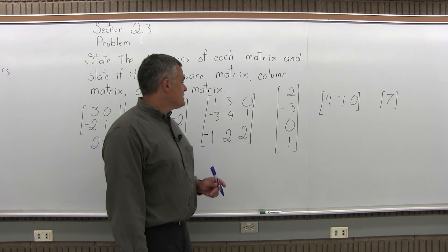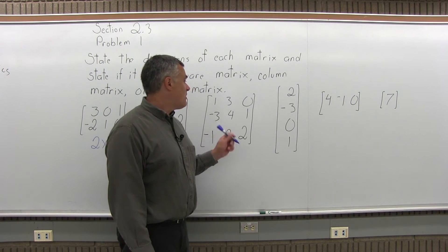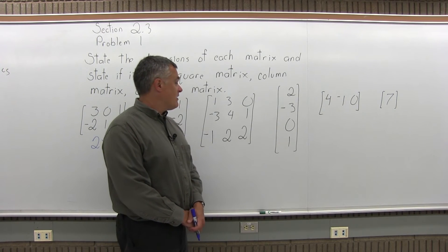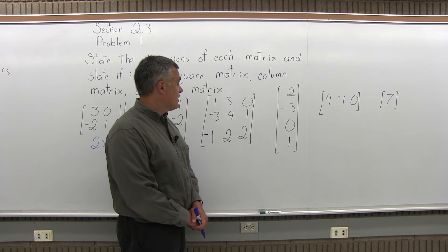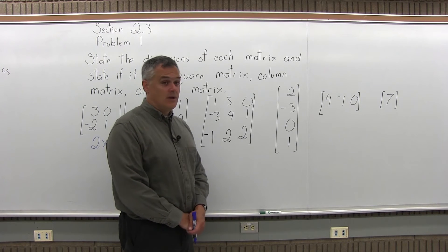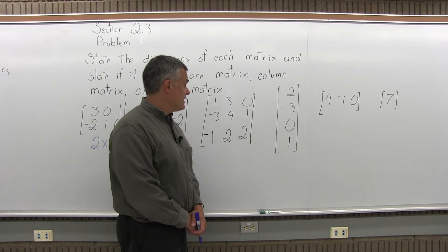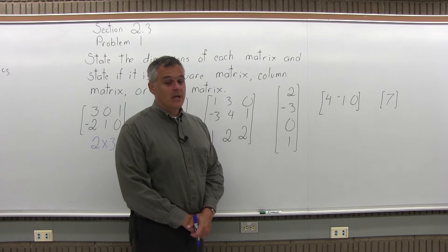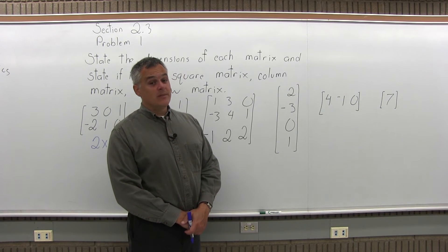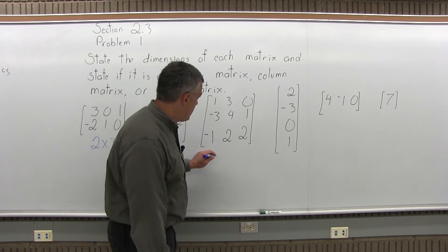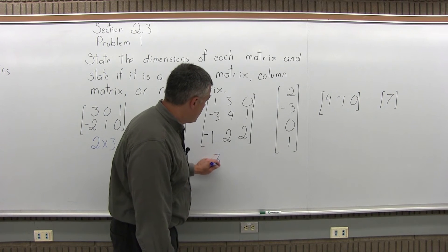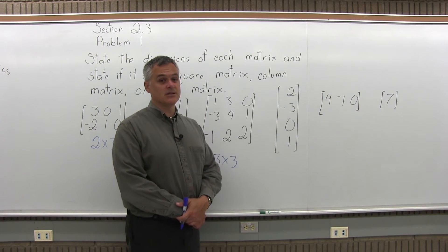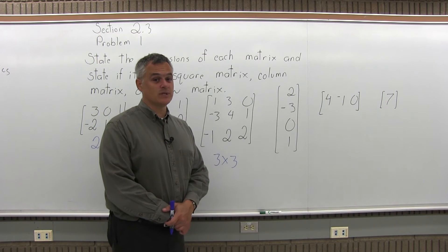The next matrix has a top row of 1, 3, 0; a row underneath of negative 3, 4, 1; and a row under that of negative 1, 2, 2. This is a 3 by 3 matrix because it has 3 rows and 3 columns. You need to state the number of rows first, then the columns.